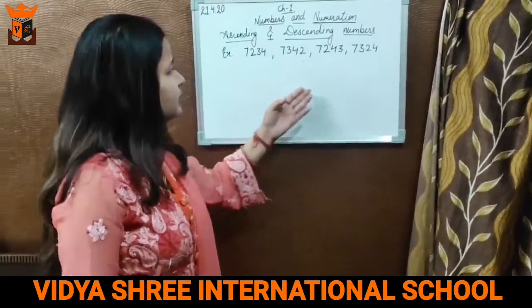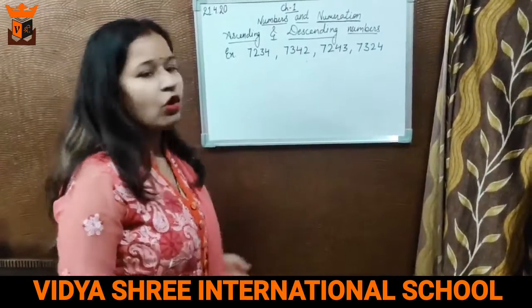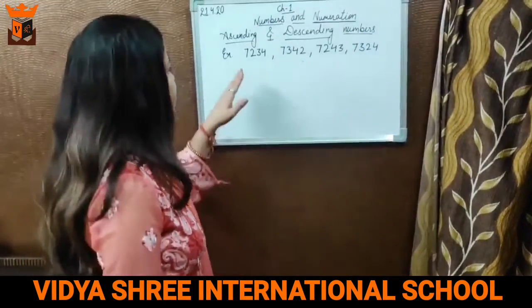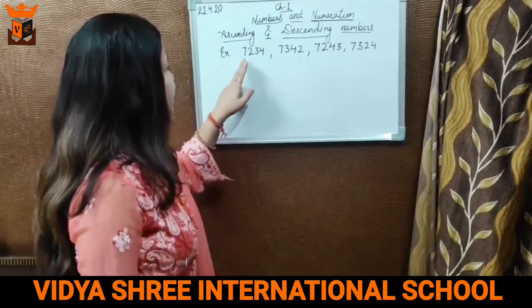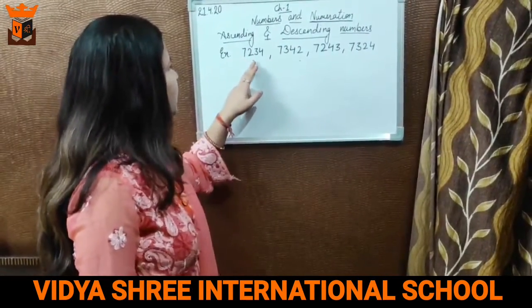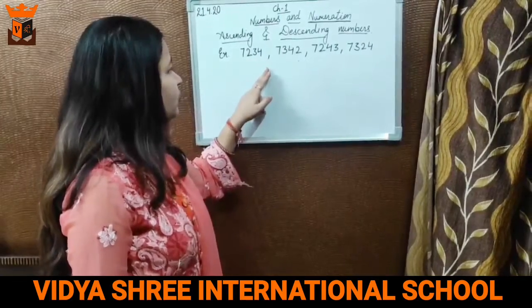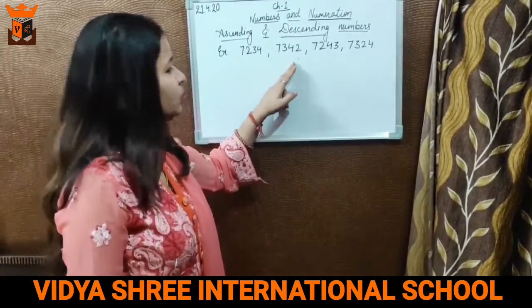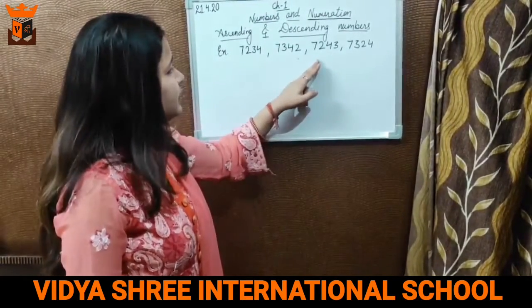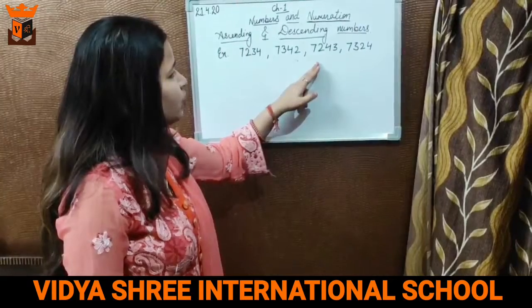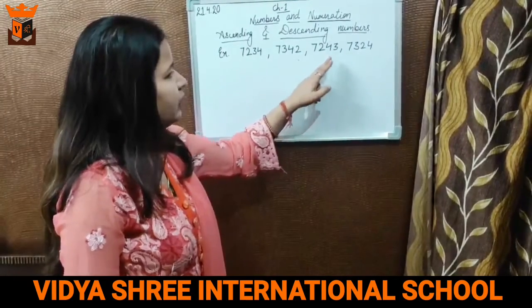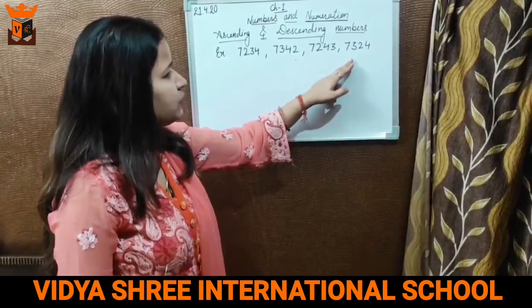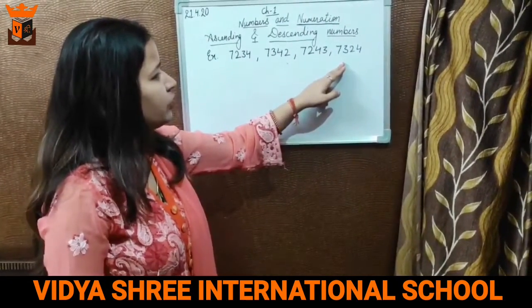Here I have taken some numbers of 4 digits. The 1st one is 7234, 2nd is 7342, 3rd one is 7243, and 4th one is 7324.